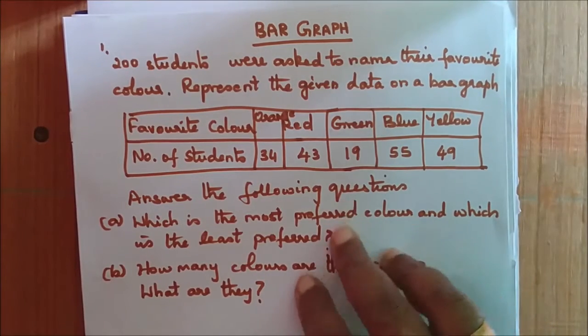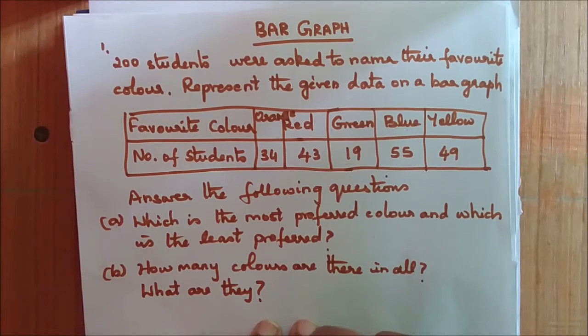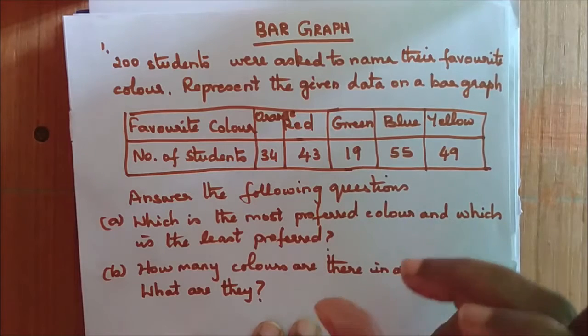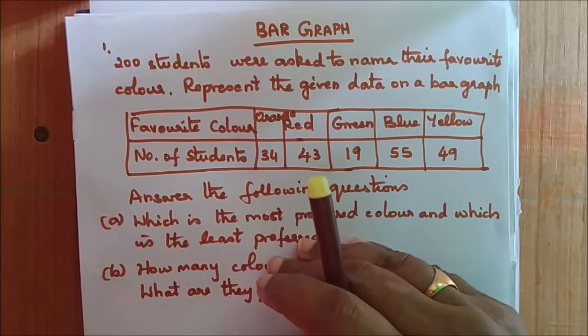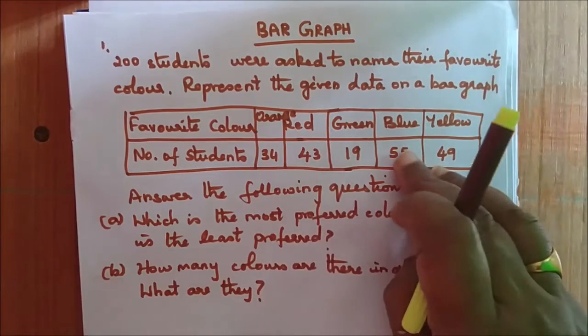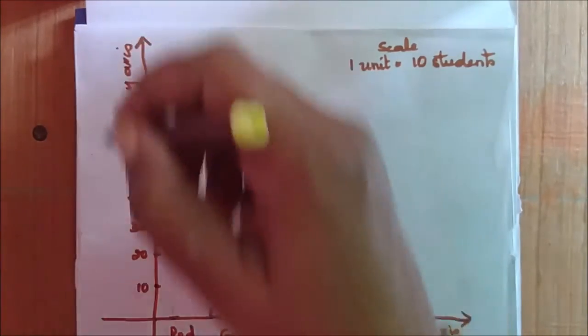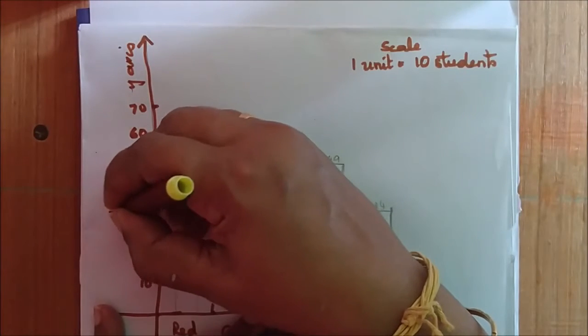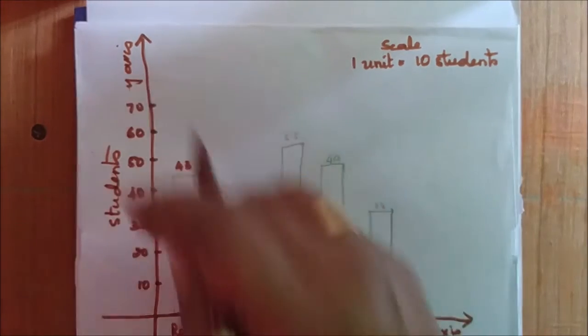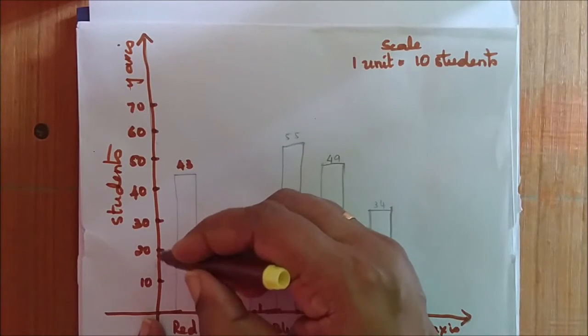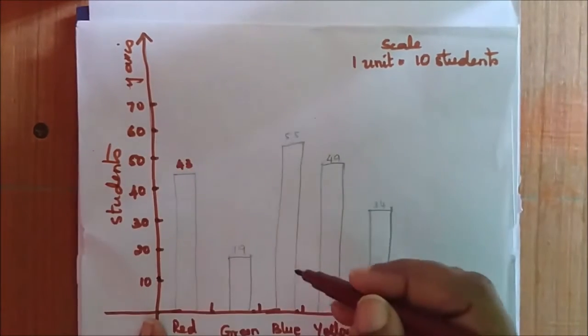Now let us draw the bar graph for this. You should understand one thing, that is the scale of a graph. Since the highest value here is 55, I will represent the scale as 1 unit is equal to 10 students, so that till 60 I have to mark it on the graph. So let us draw the bar graph. Here I have my x-axis and this is my y-axis. I will represent the number of students in my y-axis and the colors on my x-axis. My scale is 1 unit is equal to 10 students. I have made subdivisions from 10 till 60.